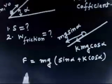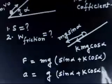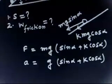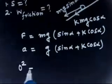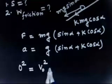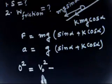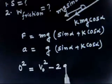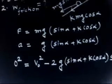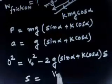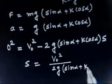The total force in the downward direction is mg(sin alpha + k cos alpha). The acceleration in the downward direction is g(sin alpha + k cos alpha). For the distance covered: v² = u² − 2as, with v = 0 and u = v₀. So v₀² = 2 · g(sin alpha + k cos alpha) · s, giving s = v₀² / [2g(sin alpha + k cos alpha)].